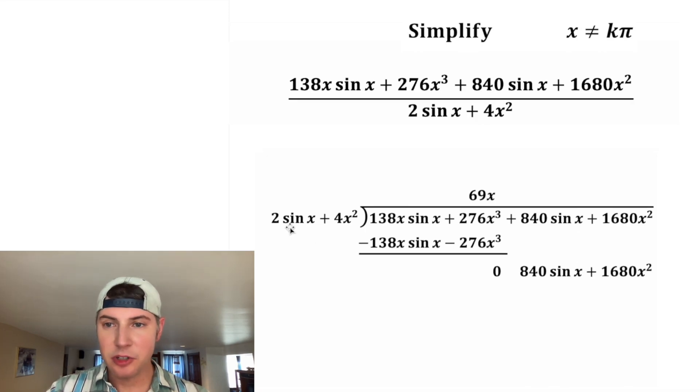Now we want to know how many times does 2 sine x go into 840 sine x. Well, we can do this division again. The sine x's will cancel. And 840 divided by 2 is 420. And then we're going to multiply.